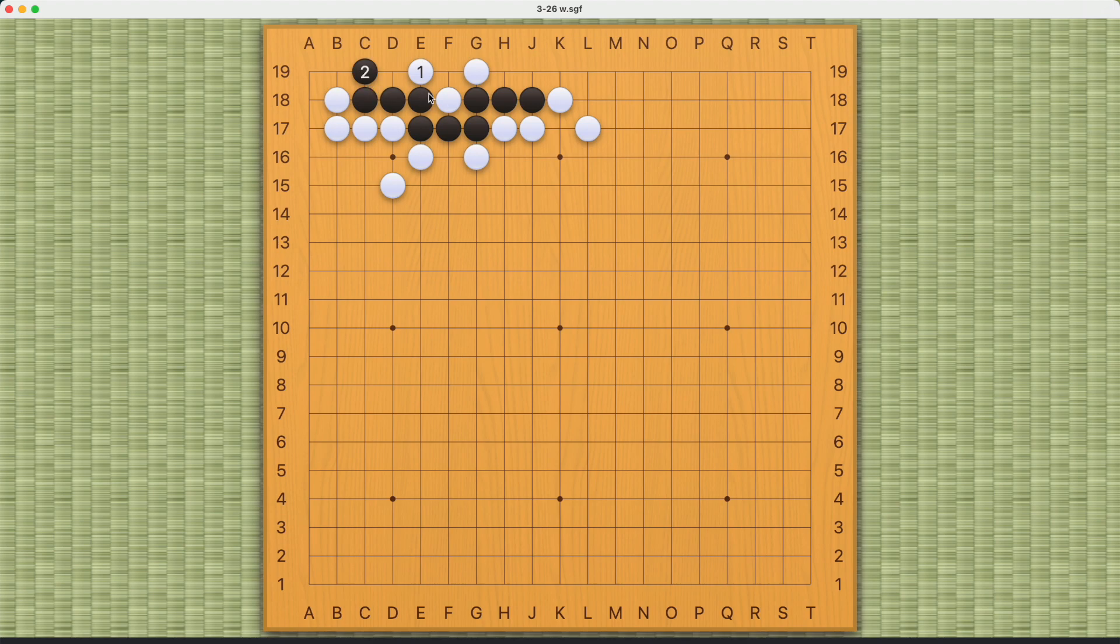Black can try to increase its eye space on one side, but white can play the bend on the other side. And now black cannot play this block because this would lead to a pyramid four shape.